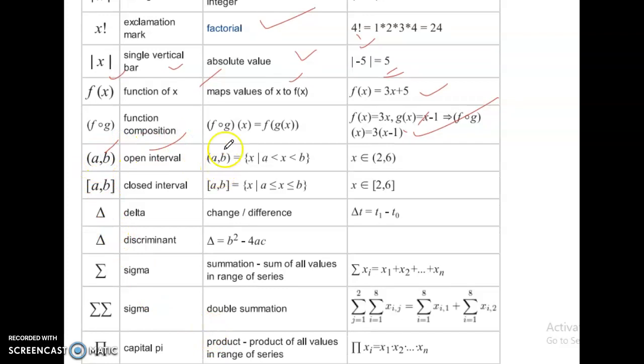Open interval a comma b. a comma b equal to x is, a is less than x, x is less than b. x belongs to 2 comma 6. Closed interval a b. a is less than or equal to x, x is less than or equal to b. Here no, not equal, that's why open interval. Here closed interval. x belongs to 2 comma 6.